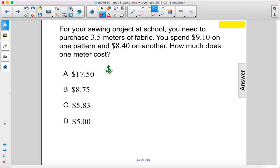So we have 9.10 plus 8.40. You make sure your decimals are lined up, 0, 5 in our decimal, and then 17.